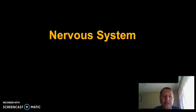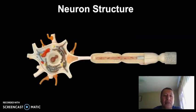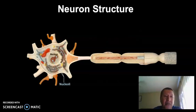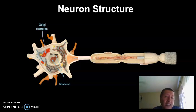The nervous system. We will talk about the neuron structure. The neuron is a cell that you find in the nervous system. It's similar to any other cell that you may find in the human body.